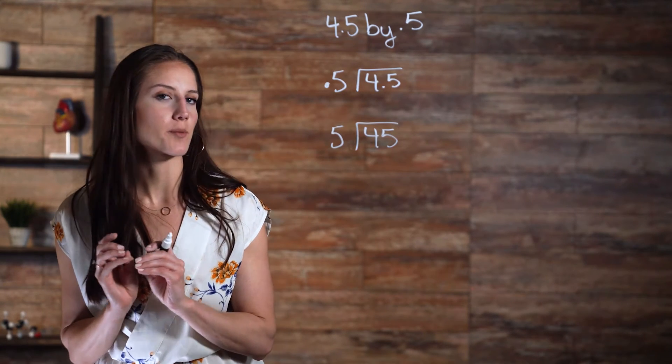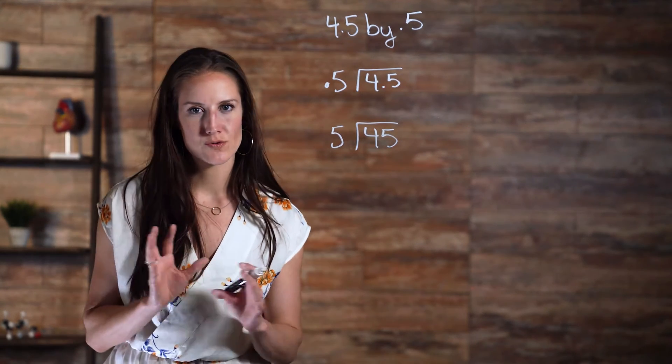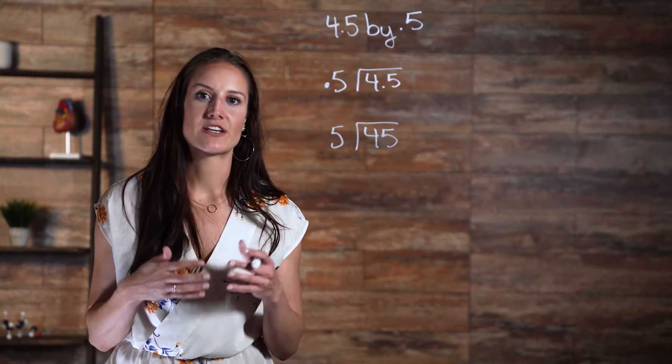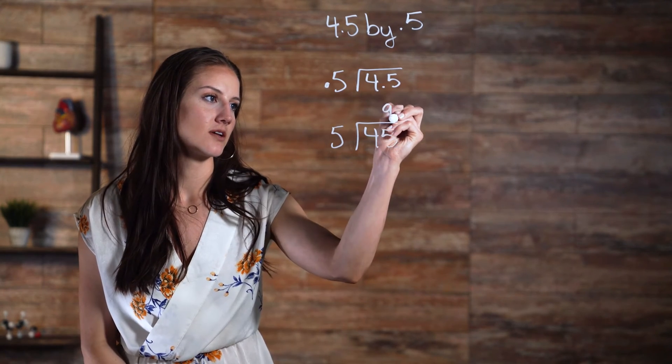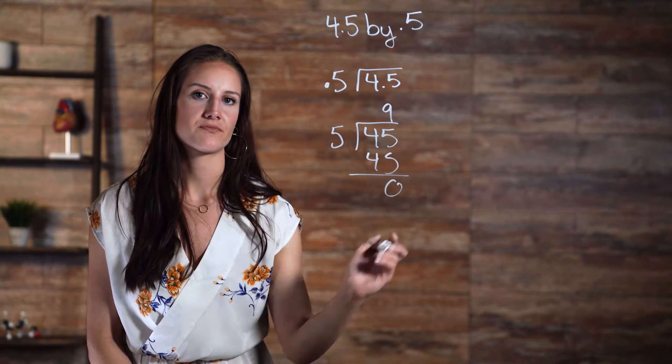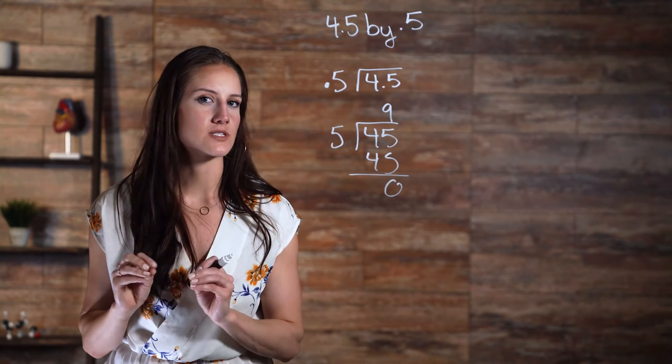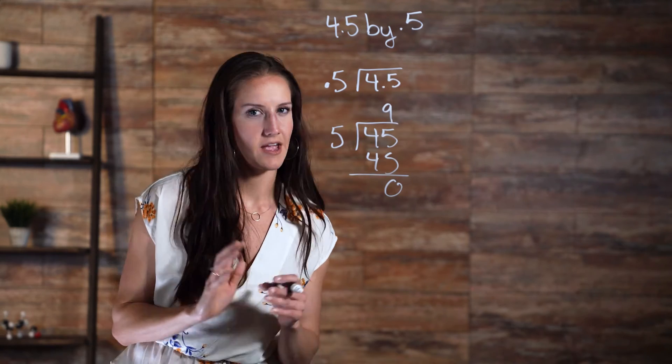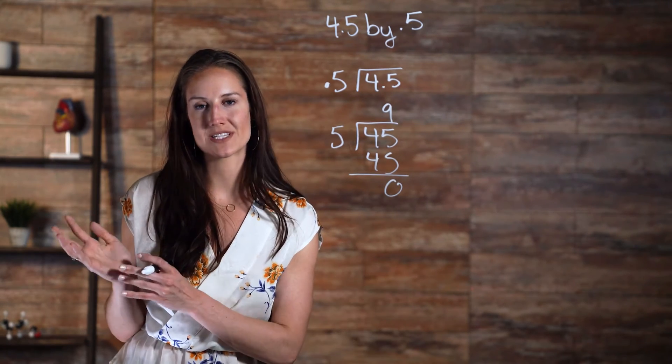Since this is a relatively straightforward problem, we don't need to go through the steps of long division. 5 times 9 is 45. You may be wondering if we need to do something to modify this answer. After all, we did change both numbers in our expression.